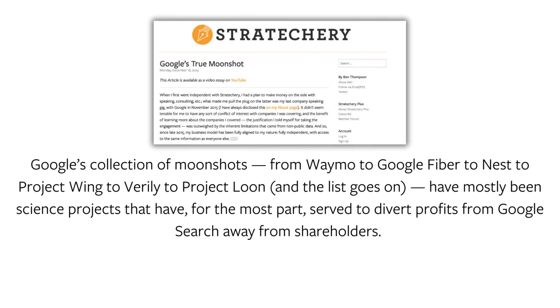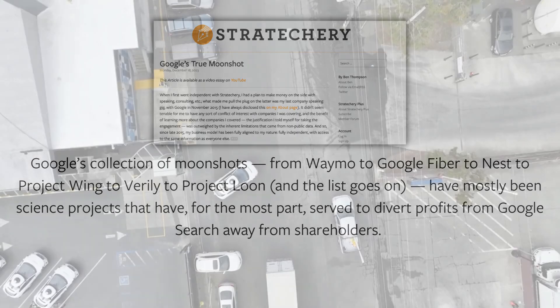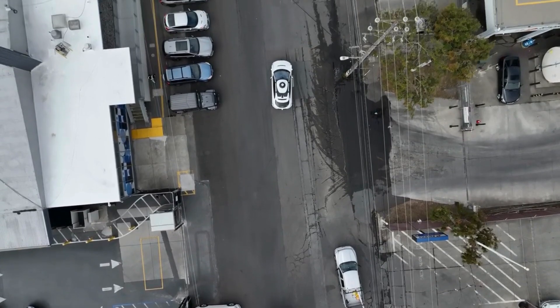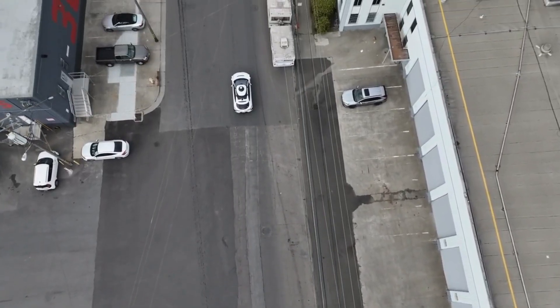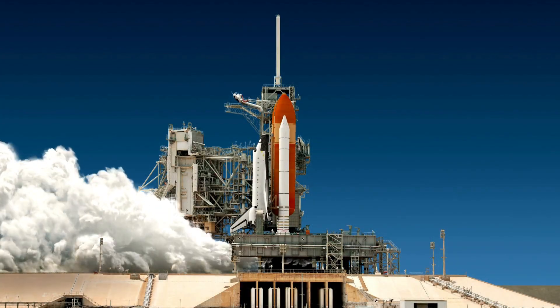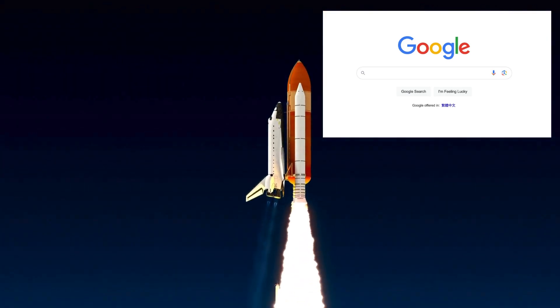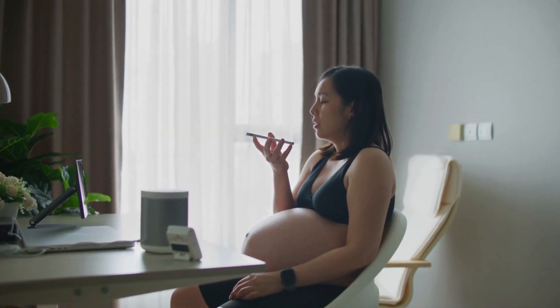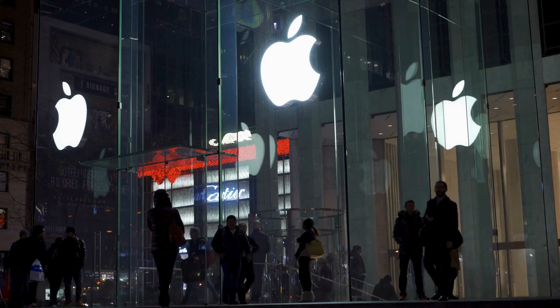From that article: Google's collection of moonshots — from Waymo to Google Fiber to Nest to Project Wing to Verily to Project Loon — have mostly been science projects that have, for the most part, served to divert profits from Google's search away from shareholders. Waymo is probably the most interesting, but even if it succeeds, it is ultimately a car service rather far afield from Google's mission statement: to organize the world's information and make it universally accessible and useful. What if the mission statement were the moonshot all along? What if 'I'm feeling lucky' were not a whimsical button on a Spartan homepage, but the default way of interacting with all of the world's information? What if an AI assistant were so good and so natural that anyone with seamless access to it simply used it all the time, without thought? That, needless to say, is probably the only thing that truly scares Apple.